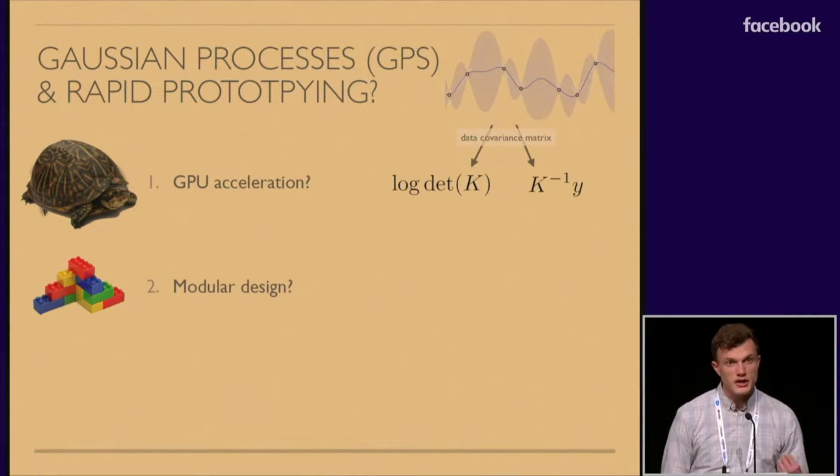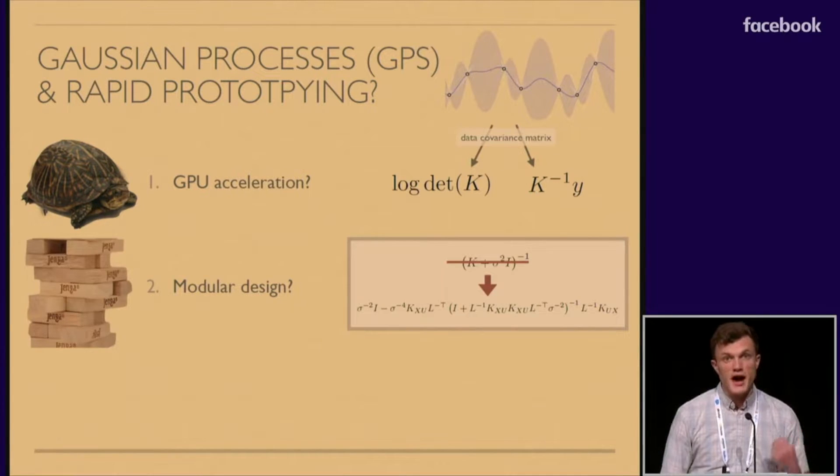In addition, let's say you want to change your GP model by adding a multiple output or maybe by using a scalable approximation. This could result in changing the entire inference scheme that you're using. You may have to re-derive a whole new set of equations, and a small change in your model doesn't necessarily correspond to a small change in code. Typically, it corresponds to a large change in your code. So you don't have the same building block style pattern that you have with neural networks, and this makes it harder to rapid prototype.